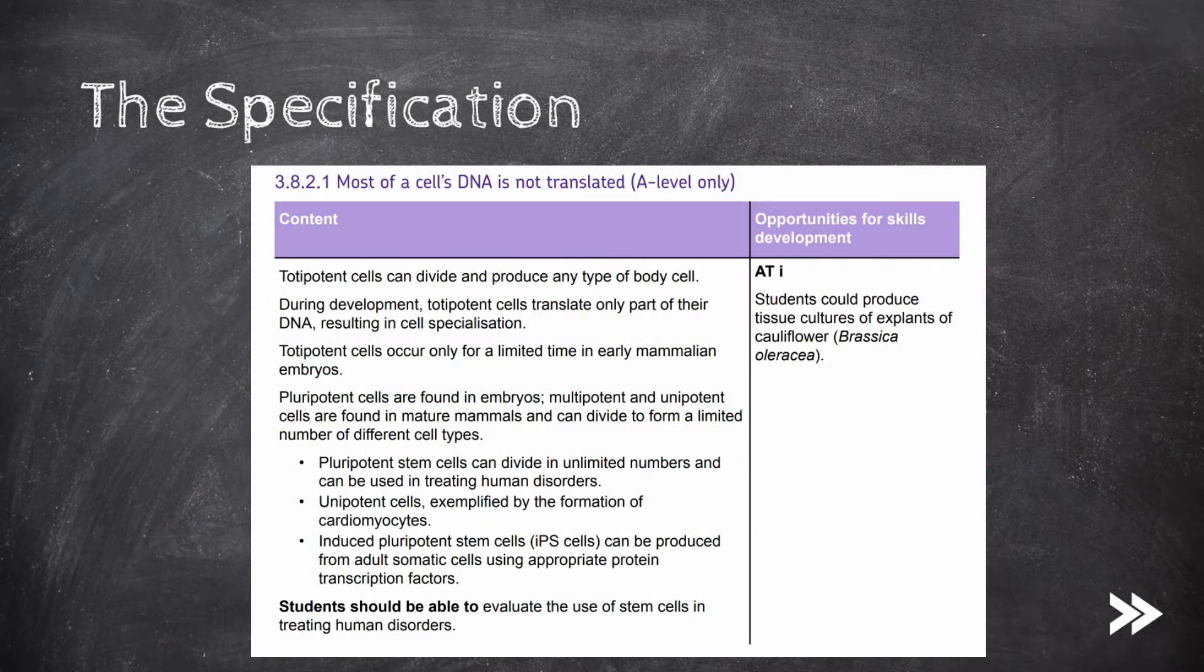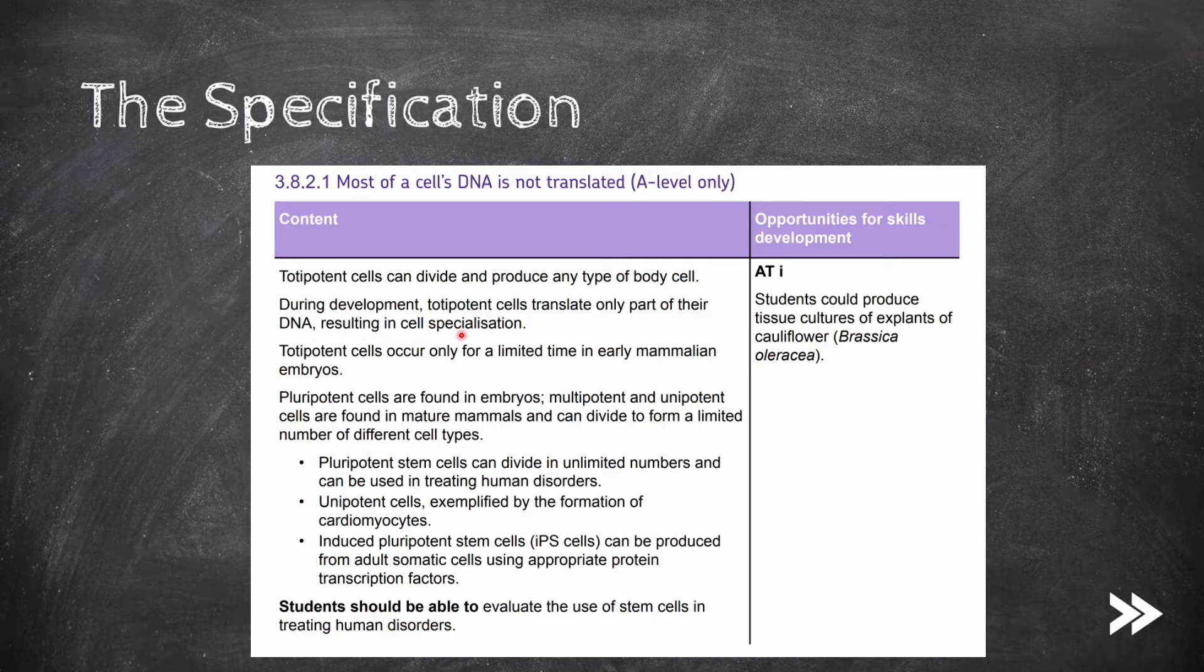As always, let's start with a look at our specification. We should know that totipotent cells can divide and produce any type of body cell. During development, totipotent cells translate only part of their DNA, resulting in cell specialization. Totipotent cells only occur for a limited time in early mammalian embryos.